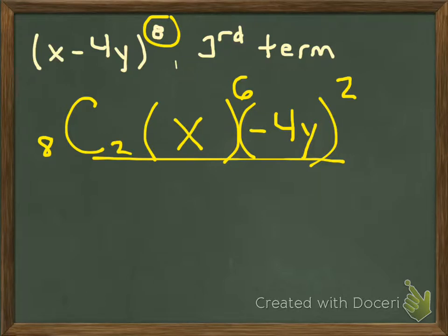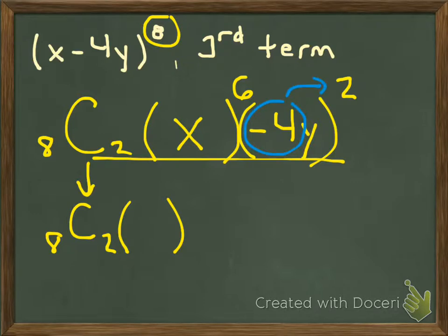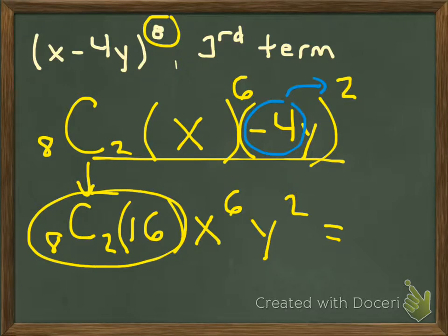So at this point, let's think about what we need. We have 8 choose 2. I'll use my calculator to do that. Let's also look at some other numbers. I have negative 4 squared. Well, I know that's 16. I also have x to the sixth and y squared. Put this all in your calculator. I'm using the commutative property to move these things around. It's all multiplication, so I can move these guys around and multiply them together. If you multiply it all together, you will find out that this term comes out as 448 x to the sixth y squared.